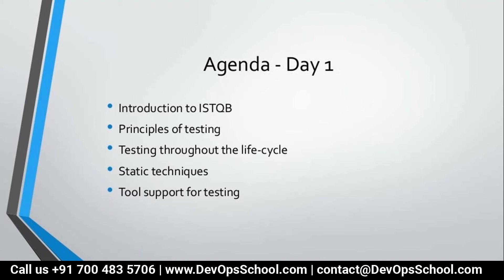Third, we are going to discuss testing throughout the lifecycle — that is STLC, Software Testing Life Cycle. Fourth, static techniques — static means constant; dynamic techniques involve requirements we cannot customize. Fifth, we'll discuss what tools are supported for testing, how to select the right tool, especially for automation testing. The tool selection is done by a senior member — test manager, project manager, or VP.